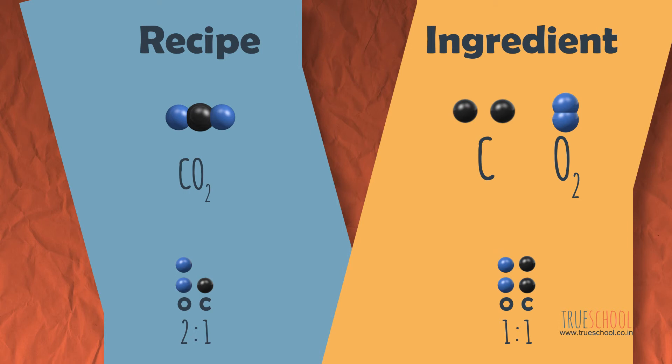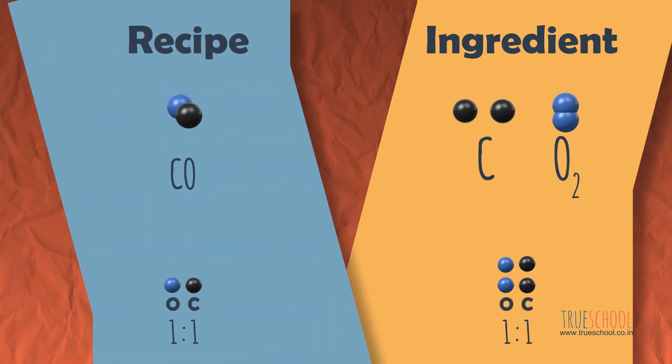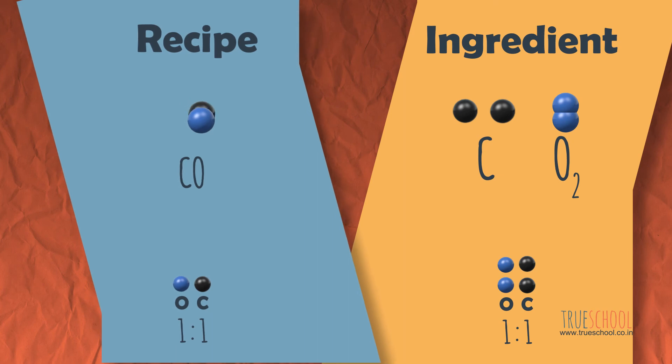Usually in these scenarios, if we let the reaction proceed as is, only one CO2 molecule will be formed and one carbon atom will remain unoxidized. But this is a special case. Carbon can even undergo partial oxidation and form carbon monoxide molecules.